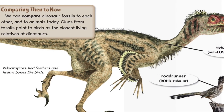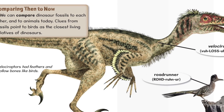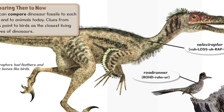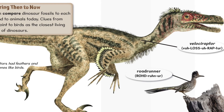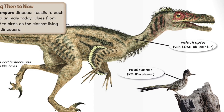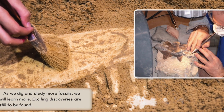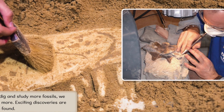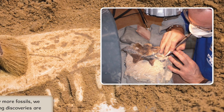We can compare dinosaur fossils to each other and to animals today. Clues from fossils point to birds as the closest living relatives of dinosaurs. As we dig and study more fossils, we will learn more. Exciting discoveries are still to be found.